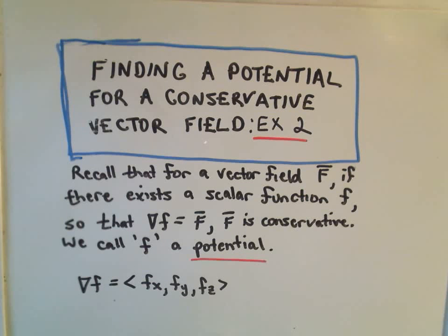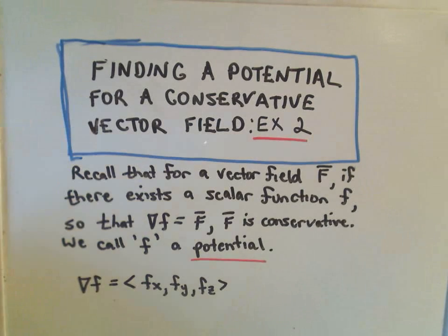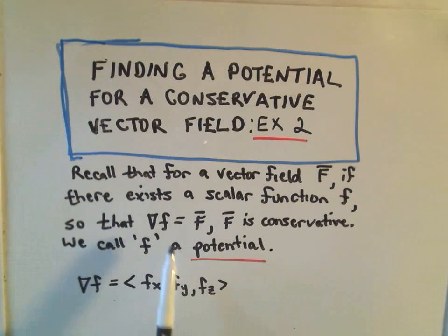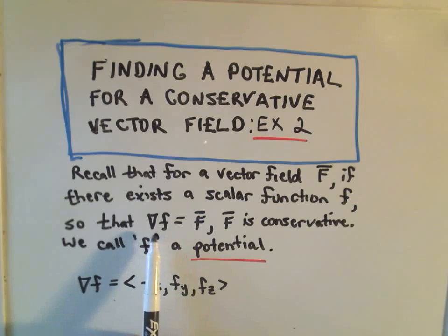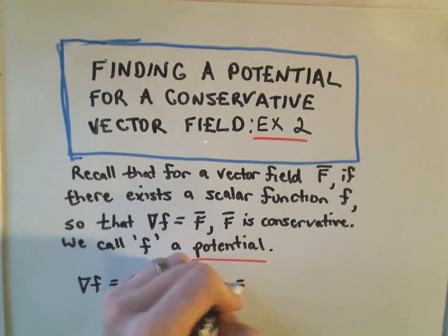This is going to be an example of finding a potential for a conservative vector field. A potential is a scalar function, little f, so that the gradient of it equals our vector field.